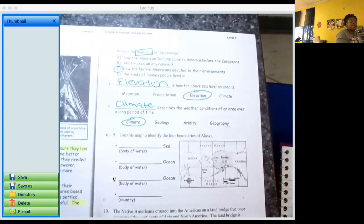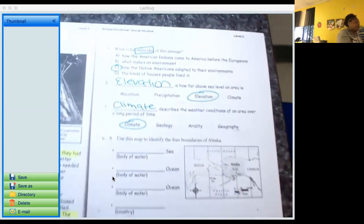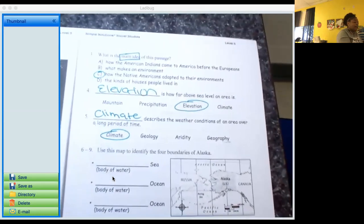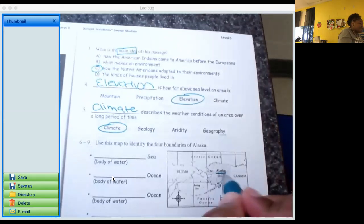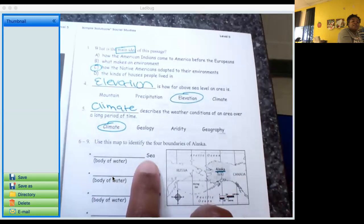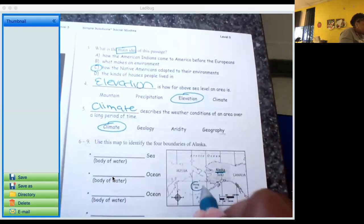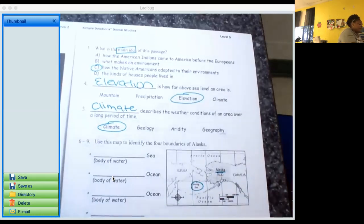Alright, six through nine. They want us to use this map to help us answer the question. So they want to know four boundaries of Alaska. Alaska is right here. Okay, so we're looking for a sea that is around Alaska. The only sea that I see here is the Bering Sea, so let's write that in.